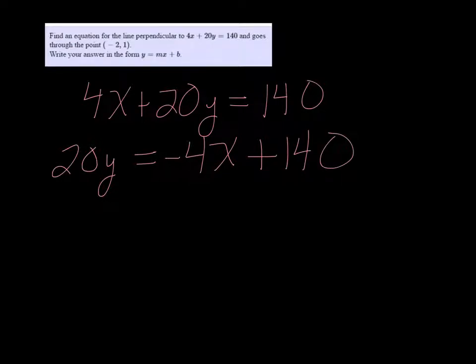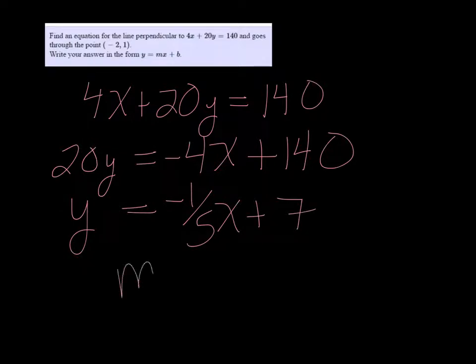Divide both sides by 20 and reduce that. That's going to be negative 1/5 x plus 7. So my slope is negative 1/5 for this one.